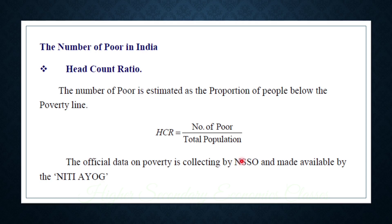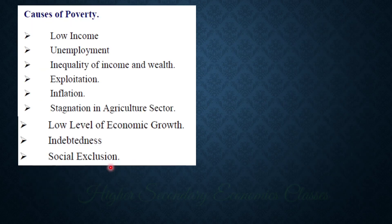Head count ratio: the number of poor people is divided by total population. The number of people in poverty is collected by NSSO — the National Sample Survey Organization.